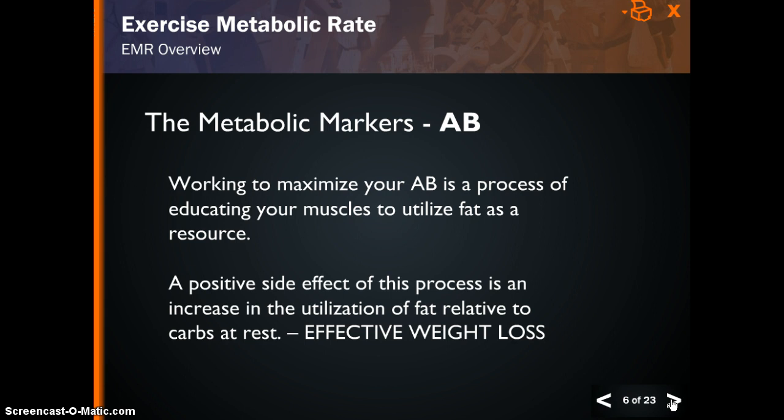A positive side effect of maximizing your aerobic base is an increase in the utilization of fat relative to carbohydrates at rest, resulting in effective weight loss. It is important to understand that aerobic base is not the fat burning zone, or 65% of your max heart rate that we're all so familiar with on the treadmill. Working to maximize your AB is a process of educating your muscles to burn fat. The actual caloric burn rate during cardiovascular exercise is relatively low, regardless of intensity. So why do it if your goal is weight loss? Because you want to teach your body to efficiently metabolize fat — to burn more fat while you're exercising, and burn more fat while you're sleeping or inactive.